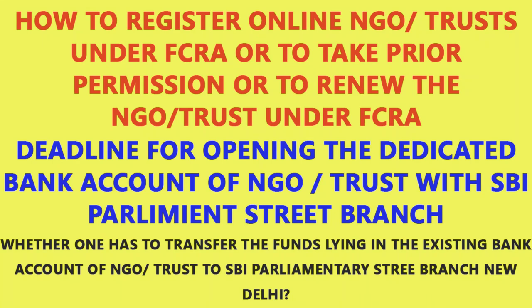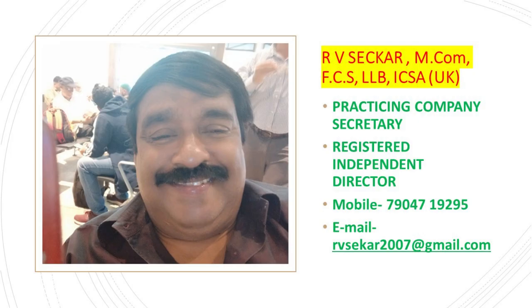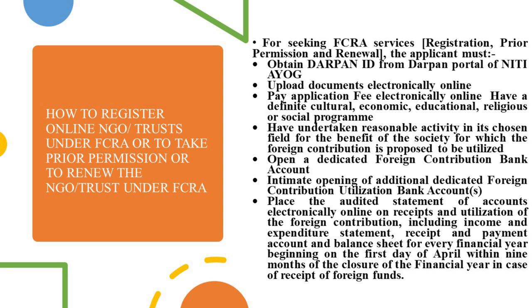My professional friends, in this video I am going to discuss about how to register your NGO, trust, or Section 8 company online under FCRA, or to take prior permission in certain cases, or to renew the existing NGO, trust, or Section 8 companies under FCRA. For seeking FCRA services — registration, prior permission, and renewal — the applicant must apply online through the NGO Darpan portal website.